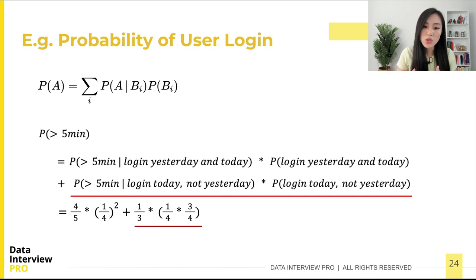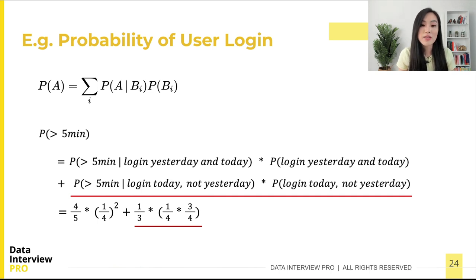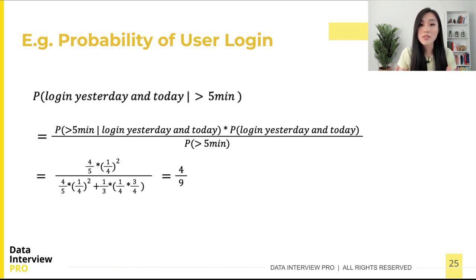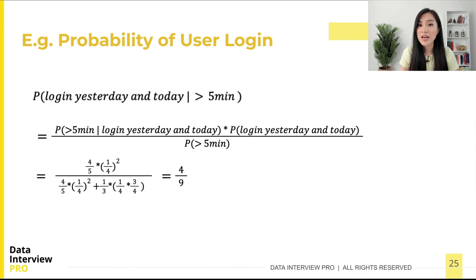Multiplying those terms gives us the joint probability for the second part. Now we have both the numerator and the denominator. The final probability works out to 4/9. This means that given a user spent more than five minutes on the webpage today, the probability that user also logged in yesterday is less than one half. That's how we apply Bayes' theorem to solve a real problem.